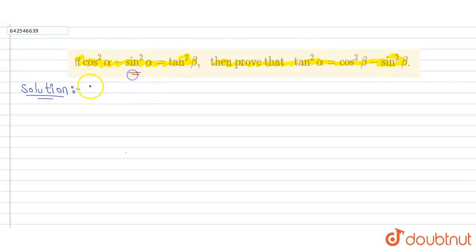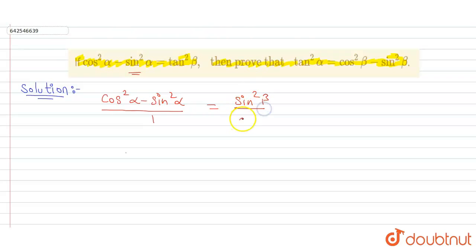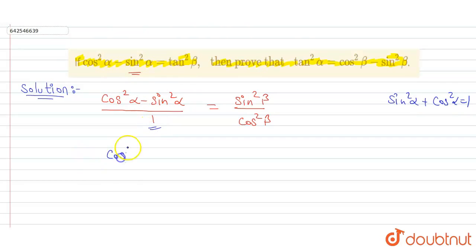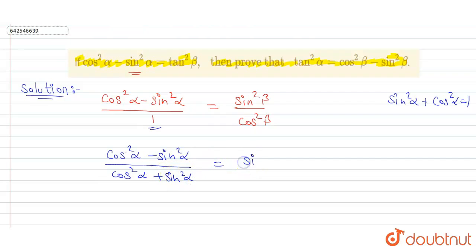We can write this as cos squared alpha minus sin squared alpha upon 1 is equal to sin squared beta upon cos squared beta, which is the formula for tan squared beta. Now, as we know, sin squared alpha plus cos squared alpha is equal to 1, so instead of 1 here, we write cos squared alpha plus sin squared alpha, giving us cos squared alpha minus sin squared alpha upon cos squared alpha plus sin squared alpha equals sin squared beta upon cos squared beta.